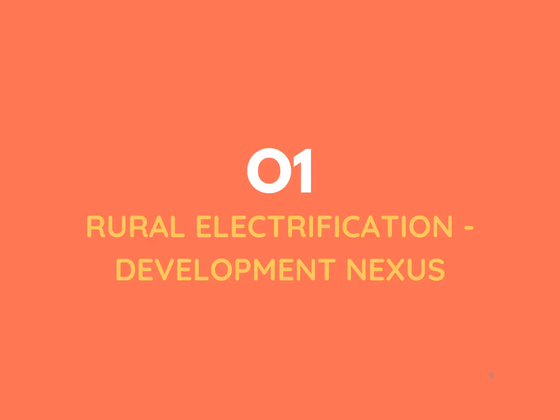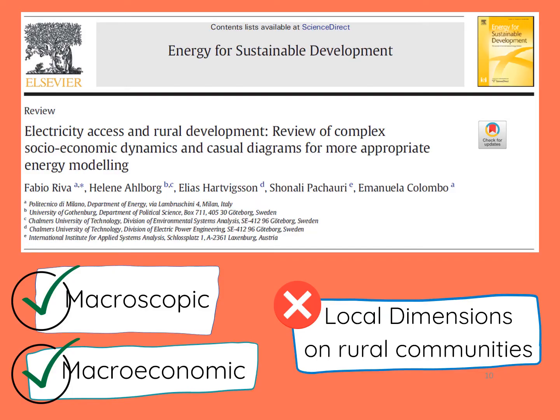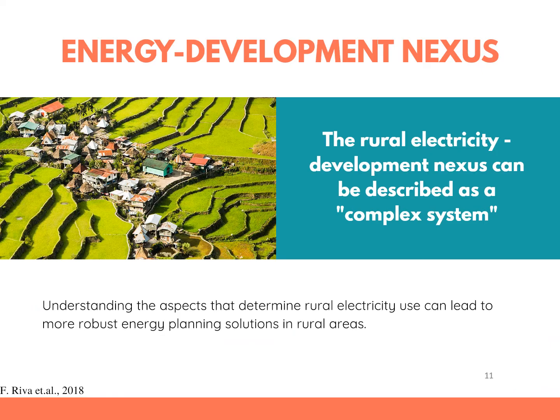First is to understand the rural electrification development nexus. As stated in the paper 'Electricity Access and Rural Development: Review of Complex Socioeconomic Dynamics and Causal Diagrams for More Appropriate Energy Modeling' by Riva et al., the relationship between electricity use and development is known from a macroscopic and macroeconomic point of view. But the local dimension of the electricity development nexus in rural communities is not completely captured. Hence, modeling of the relationship results in the use of simple deterministic relations whose outcomes do not reflect reality. They pointed out that the rural electricity development nexus can be described as a complex system, and understanding the aspects that determine rural electricity can lead to more robust energy planning solutions in rural areas.